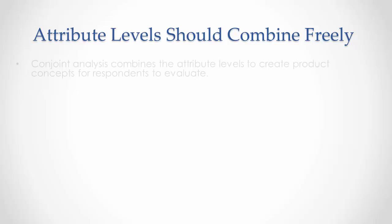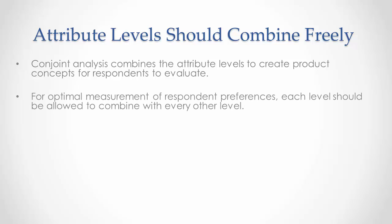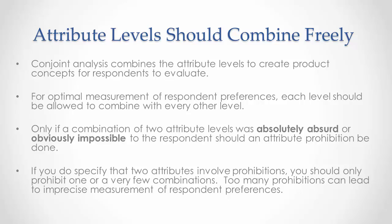Attribute levels should combine freely. Conjoint analysis combines the attribute levels to create product concepts for respondents to evaluate. For optimal measurement of respondent preferences, each level should be allowed to combine with every other level. Only if a combination of two attribute levels was absolutely absurd or obviously impossible to the respondents should an attribute prohibition be done. If you do specify that two attributes involve prohibitions, you should only prohibit one or a very few combinations. Too many prohibitions can lead to imprecise measurement of respondent preferences.